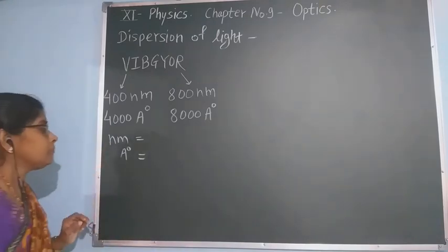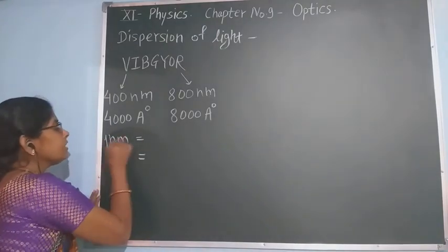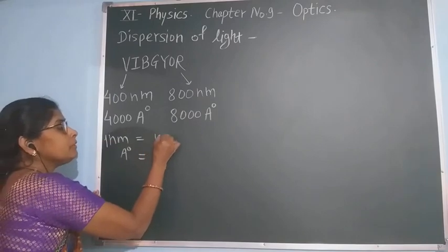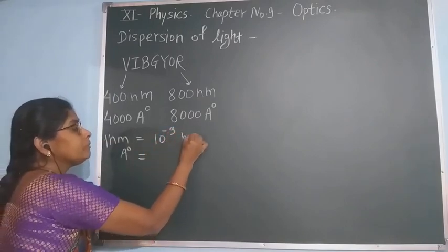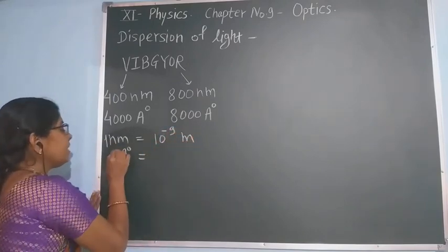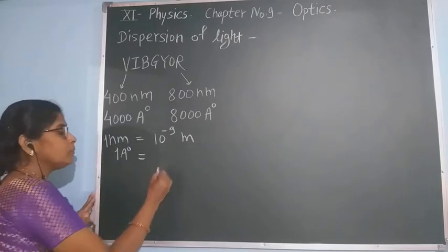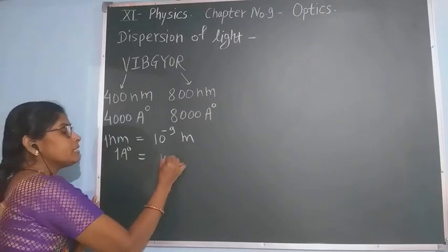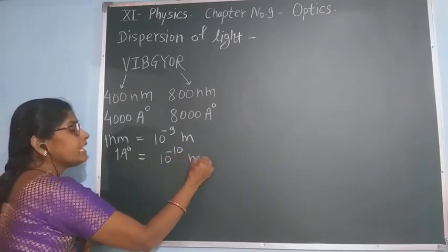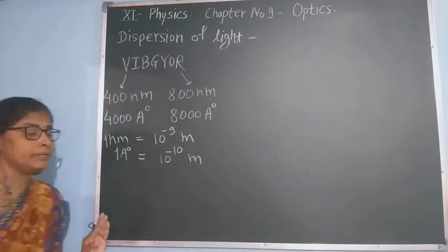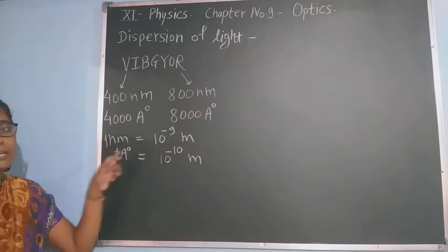1 nanometer is equal to 10 raised to minus 9 meters, while 1 angstrom is equal to 10 raised to minus 10 meters. This is the relation between these two units.